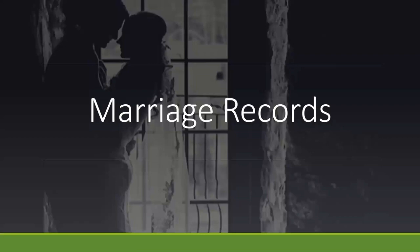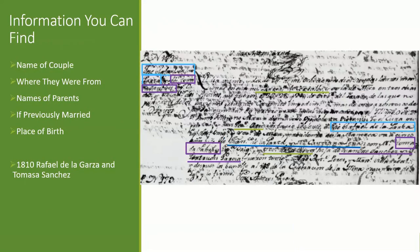Now we're going to look at the marriage records. This is the type of information you're going to be able to find: the name of the couple, where they were from, names of the parents, if previously married, and place of birth. This is the 1810 marriage record of Rafael de la Garza and Tomasa Sanchez, who are also my ancestors. The record is kind of difficult to read, but what you want to do is get the neighboring records — some of them may be more legible. Fortunately, all these records — baptisms, marriages, and death records — follow a specific format, so it will be easier to decipher them.